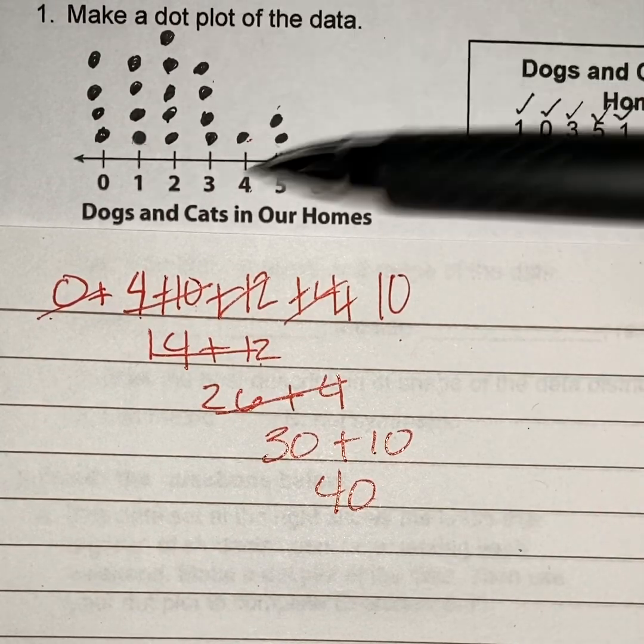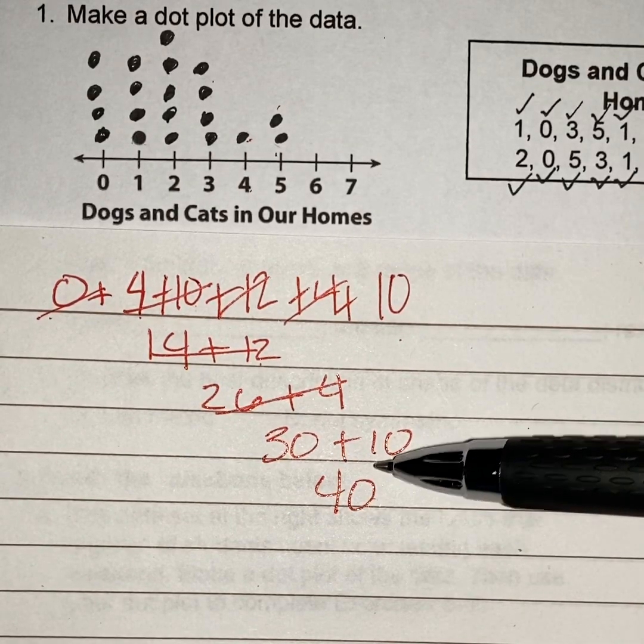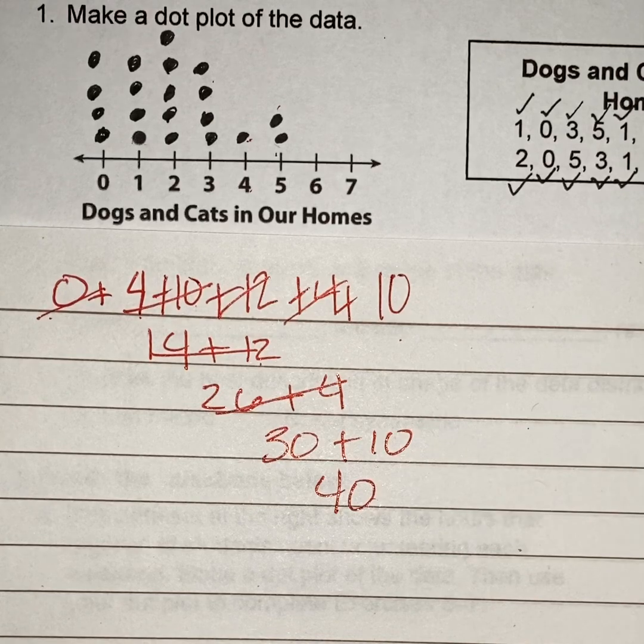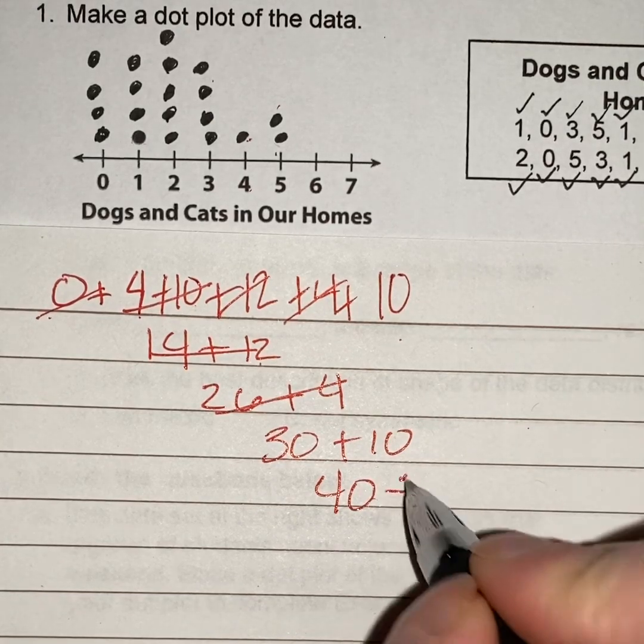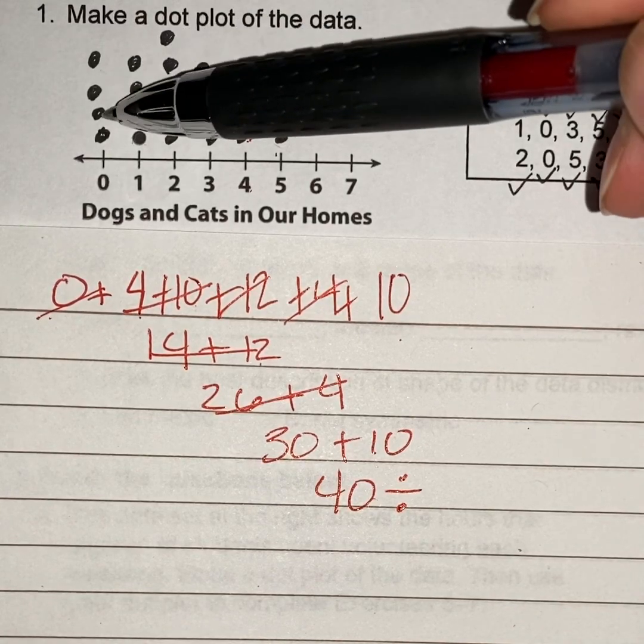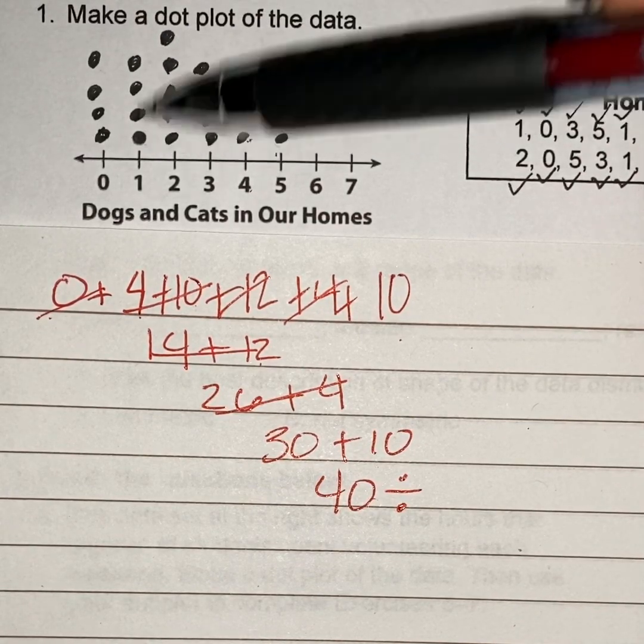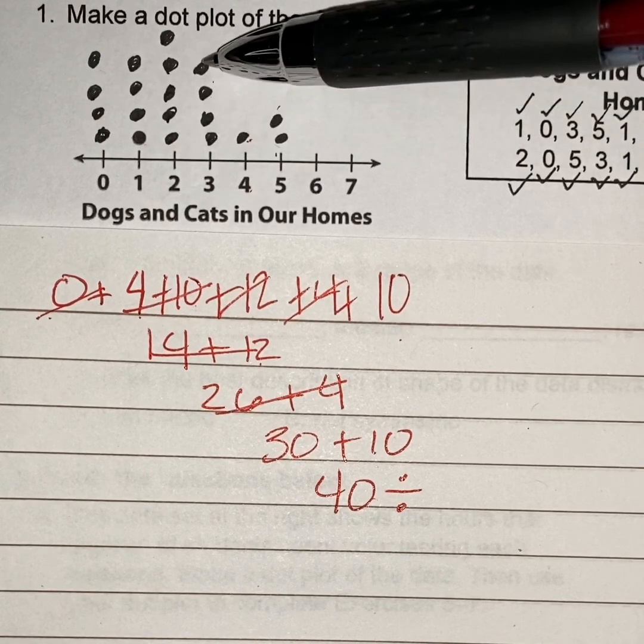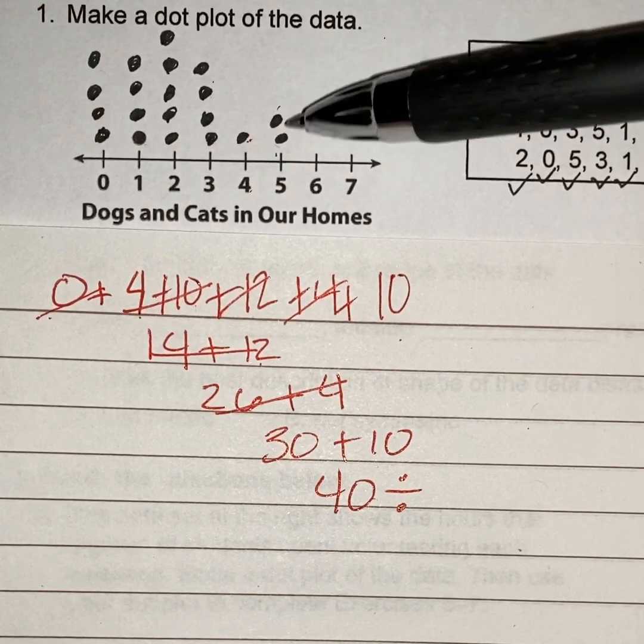Then plus another four, that's going to be thirty, plus ten, that's forty. So my sum of all of this information right here is forty. Now I'm going to take forty and I'm going to divide it by the amount of numbers that I added up, that way I can find my mean. So that's one, two, three, four, five, six, seven, eight, nine, ten, eleven, twelve, thirteen, fourteen, fifteen, sixteen, seventeen, eighteen, nineteen, twenty.